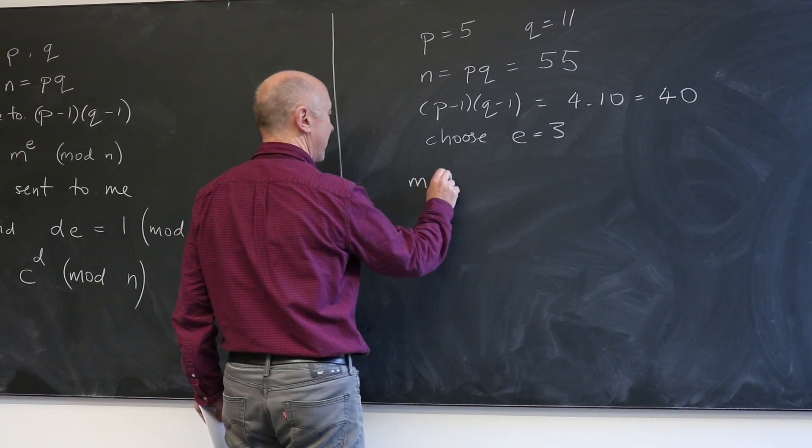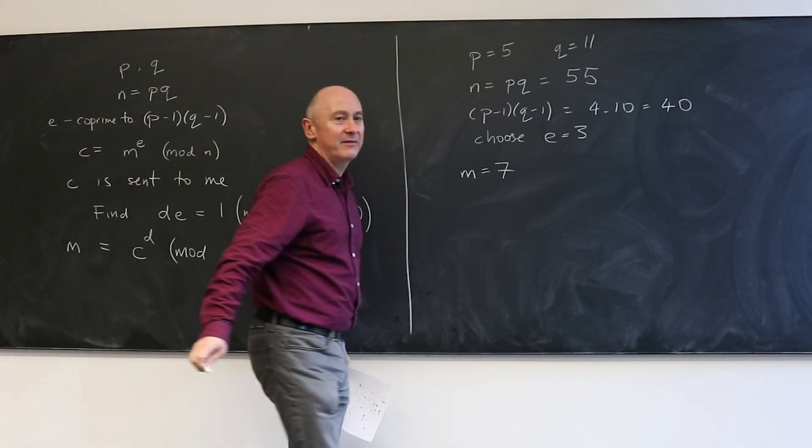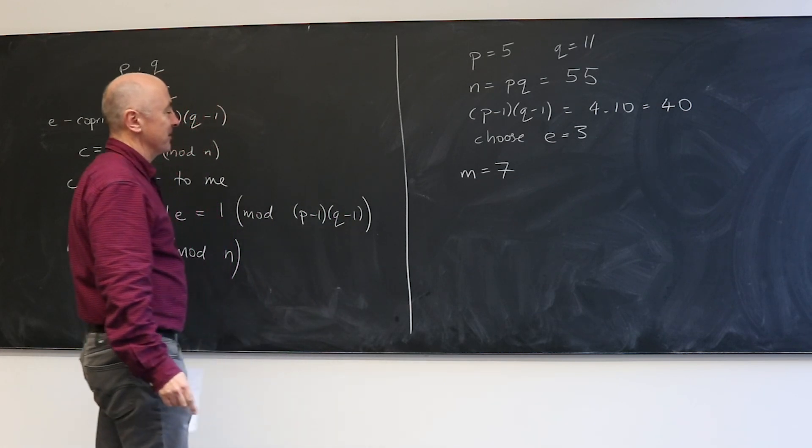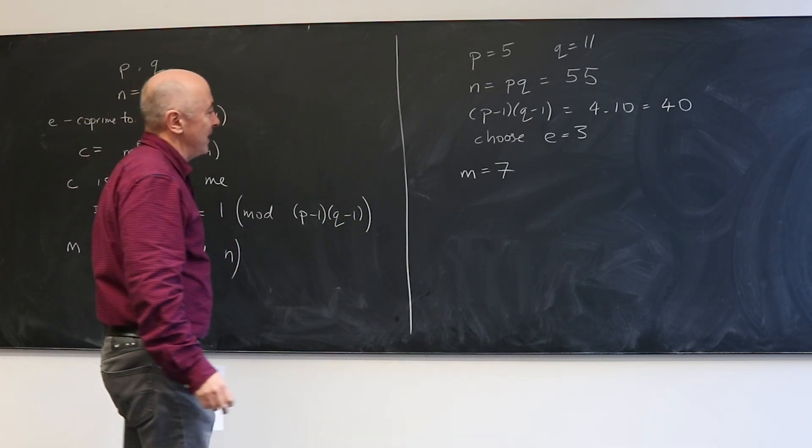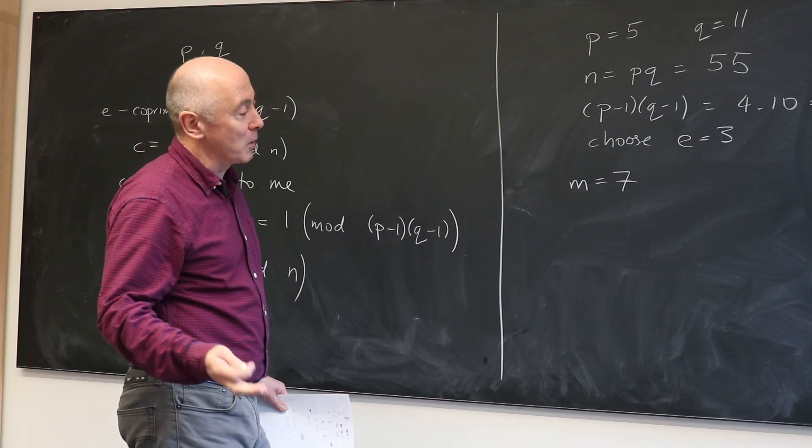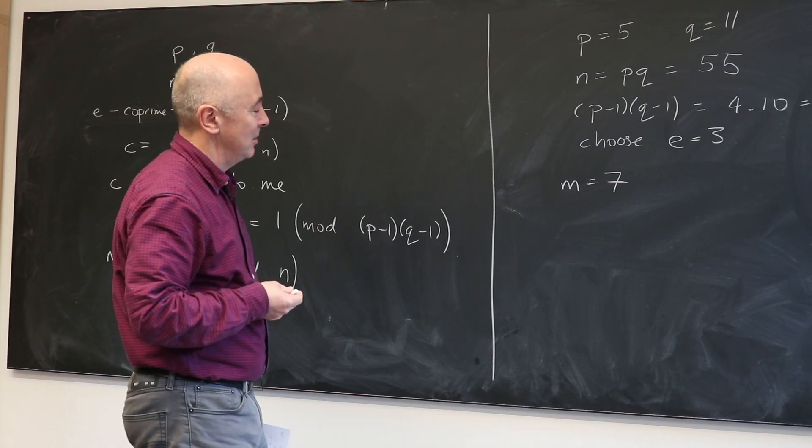So M is 7. They want to send me the number 7 for some purpose. I can't conceive what. But they don't want anyone else to know that they've sent me the number 7. What do they do?